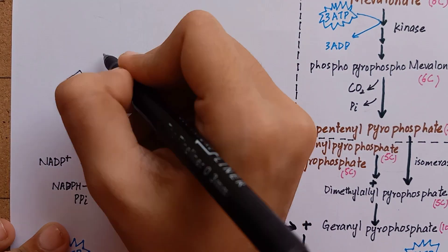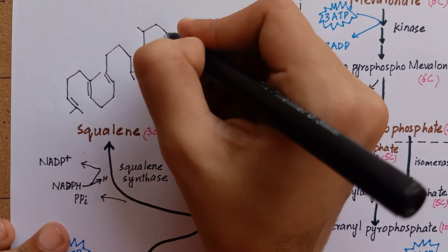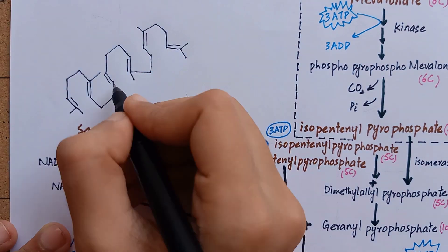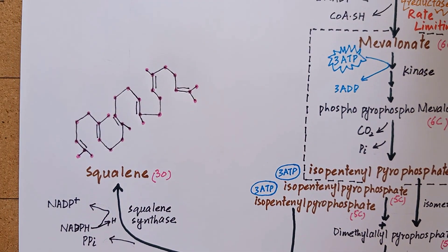This is the structure of squalene. It is a linear molecule, but the structure is written in a way that it gives an image of rings, but there are no rings.